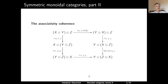And the associativity coherence — it's a hexagon diagram. If we start from (X tensor Y) tensor Z, there are two natural paths to Y tensor Z tensor X. The first way: apply the associator to get X tensor (Y tensor Z), then swap X and (Y tensor Z) using sigma, then apply the associator again to reach Y tensor Z tensor X. Alternatively, swap X and Y to get (Y tensor X) tensor Z using sigma, apply the associator to get Y tensor (X tensor Z), then apply sigma again to swap X and Z, arriving at Y tensor Z tensor X. These two ways should coincide.